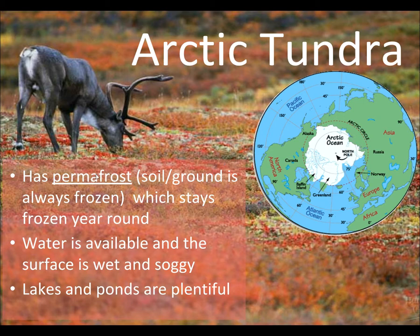So we get to Arctic tundra. The big vocab word you need to write down is permafrost — probably the number one vocab word for Arctic tundra. It's a combination of two words: 'frost,' meaning frozen, and 'perma,' the prefix of permanent. So permafrost is permanently frozen ground — soil that is always frozen.